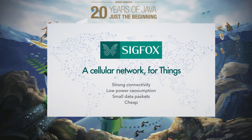Meet Sigfox. Sigfox is a cellular network especially dedicated to connecting things in the IoT era. It offers strong connectivity with direct internet access, allows very tiny data packages to be sent, has low power consumption, and for those reasons is significantly cheaper than 3G and 4G solutions — making it ideal for connecting everyday things to the internet. Sigfox is a French company based near Toulouse, founded in 2009, and earlier this year received a funding round of 150 million euros.